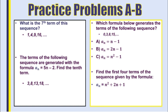What is the 7th term of the sequence 1, 4, 9, 16? You could notice the pattern of adding 3, then 5, then 7. But you should also recognize these as perfect squares: 1 squared, 2 squared, 3 squared, 4 squared. So if we're trying to find the 7th term, we do 7 squared, which gives us 49. So 49 is the 7th term of that sequence.